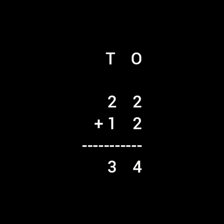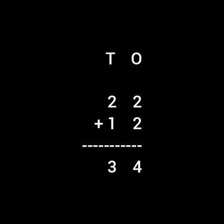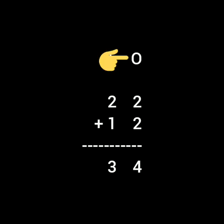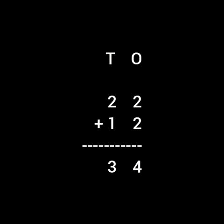Now let us see one more example. Again you can see the 10's and 1's column is given. Under the 10's column you can see 2, and under the 1's column 2. Then again under the 10's column 1, and under the 1's column 2. It means 22 plus 12. Again we will start counting from the left hand side. So on the left hand side, in the ones column, 2 plus 2 is given.